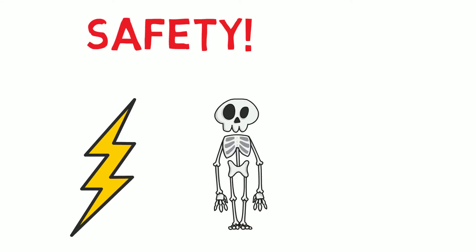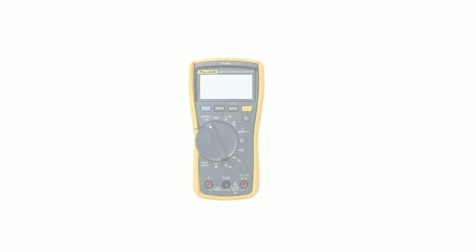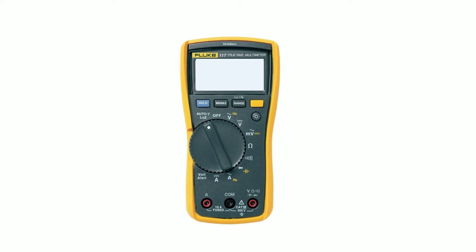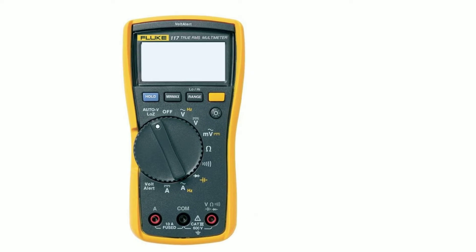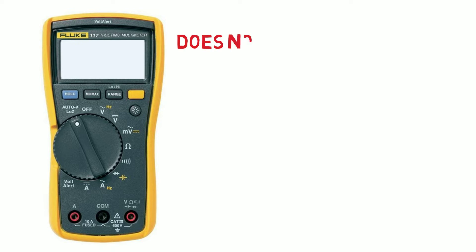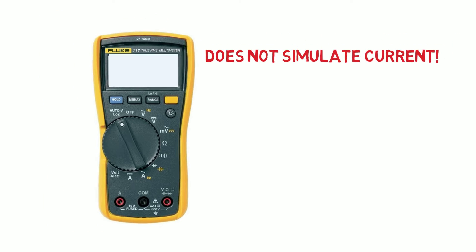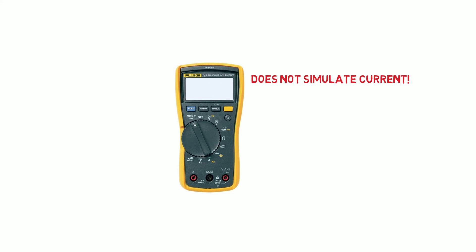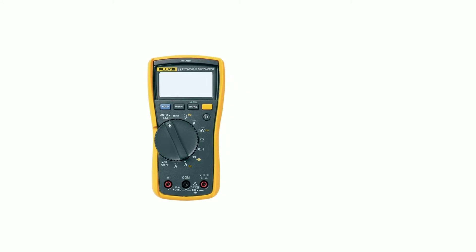This is a Fluke 117 multimeter. It is a quality multimeter that has all the basic functionality for taking measurements from an electronic loop. It does not have the functionality to simulate currents that you will need for calibration of input devices and some fault finding. For that type of work you'll need a process meter like the Fluke 789. I'll go over its functionality in the next video.